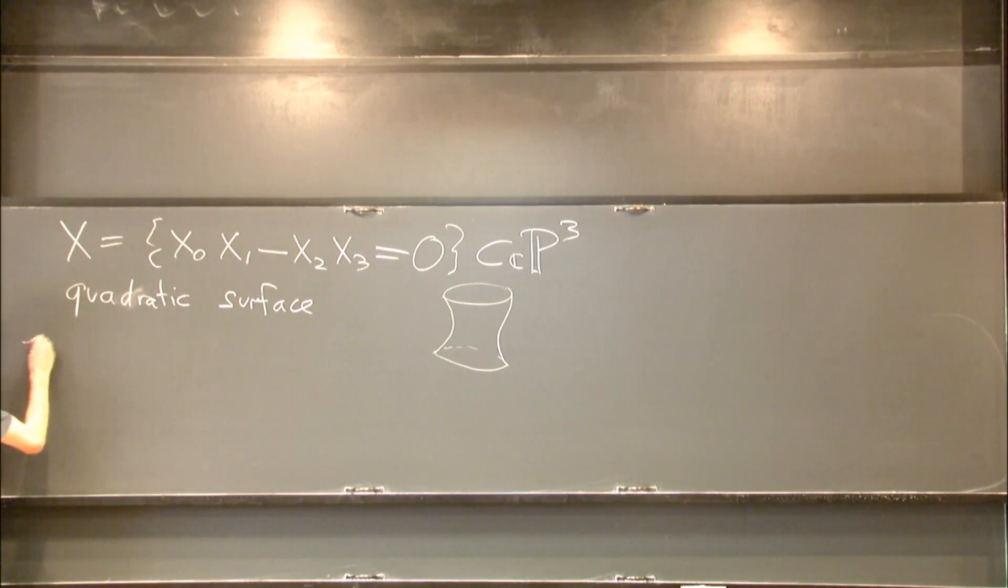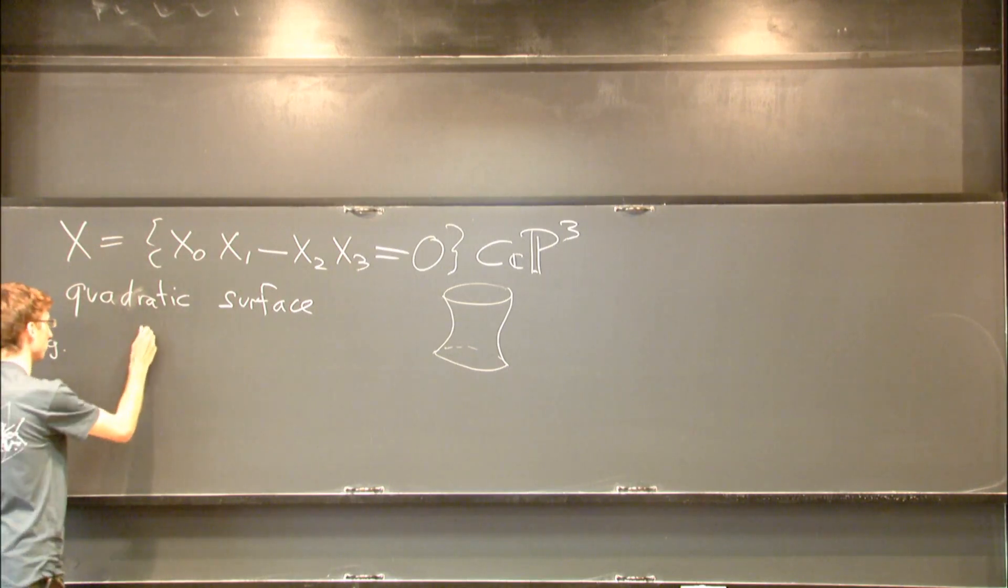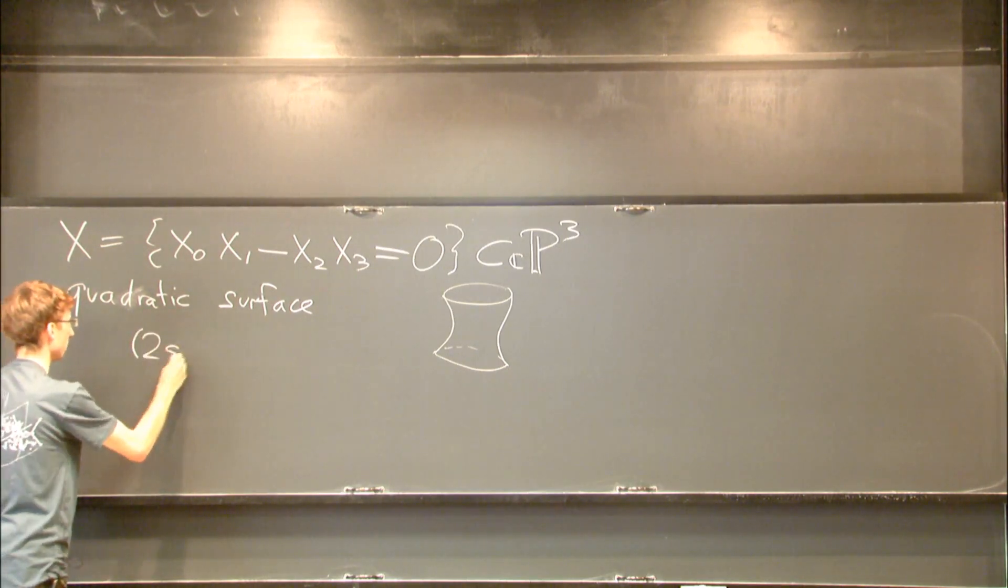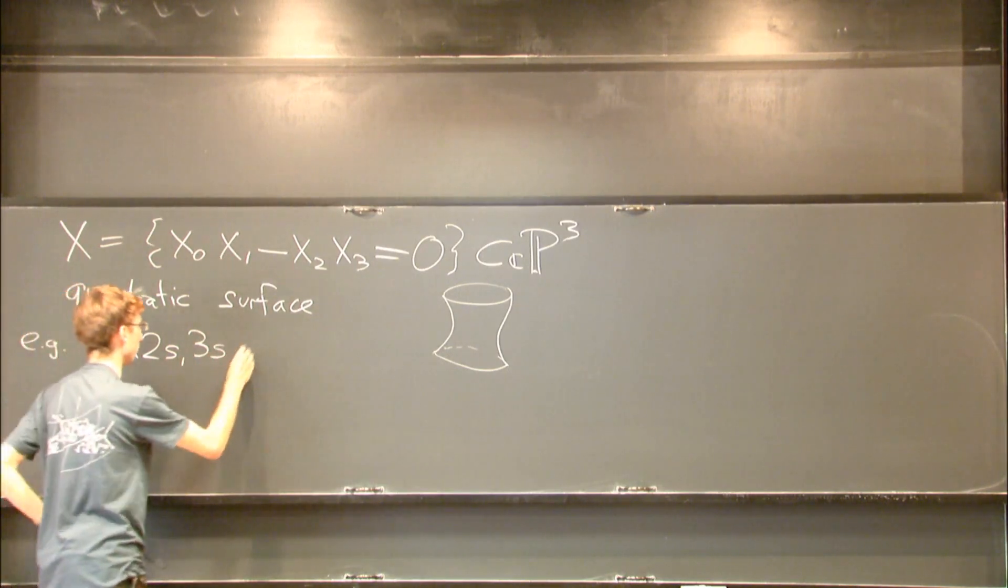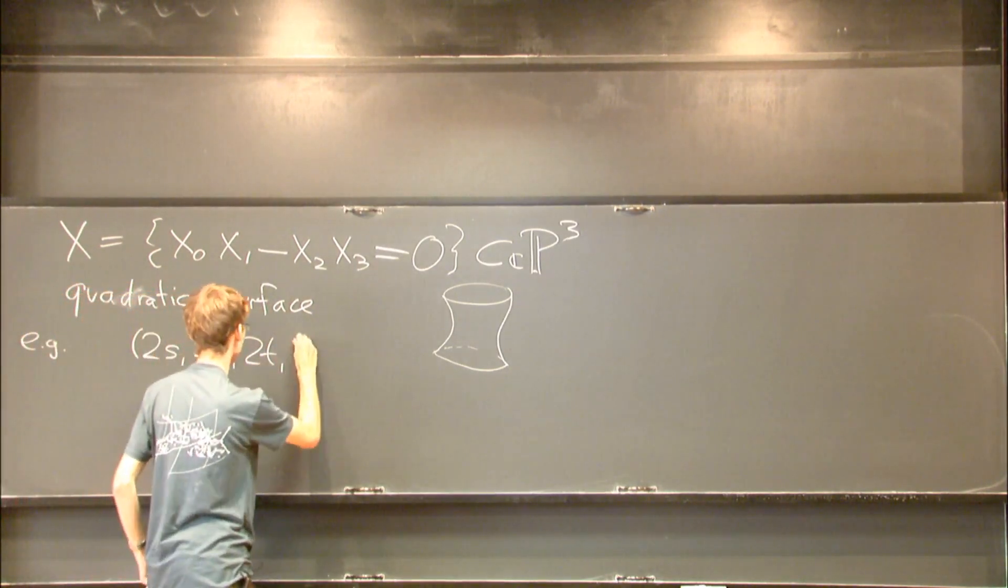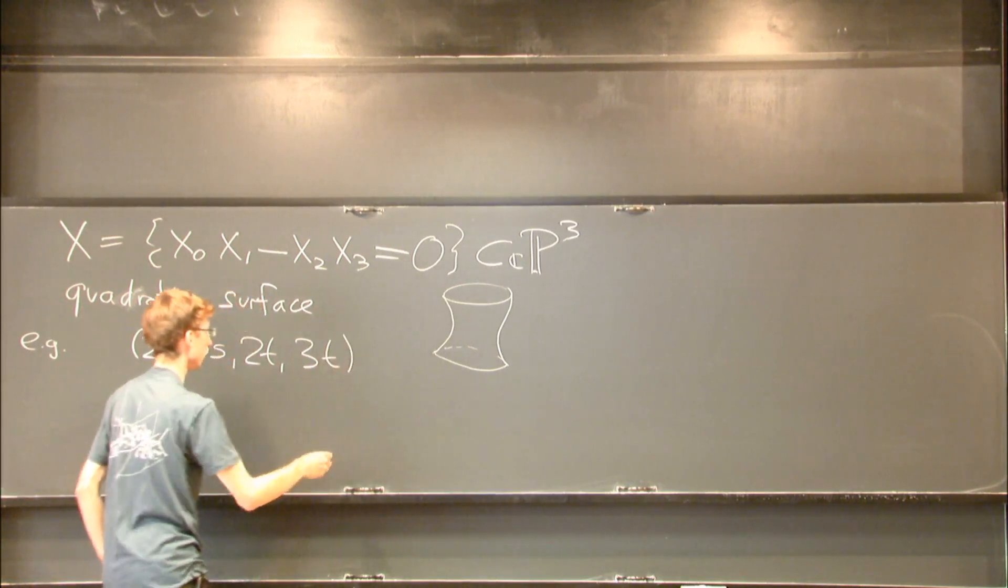To give an example, here you can actually write down many possible lines. For example, you can look at the following line with the following parametrization: 2s, 3s, 2t, 3t.